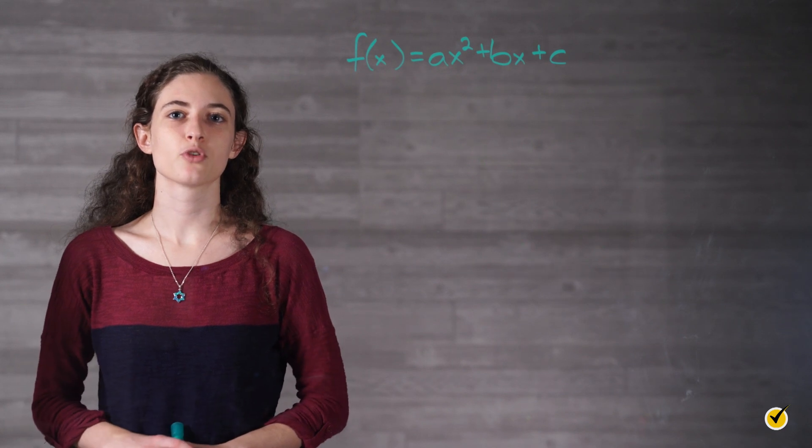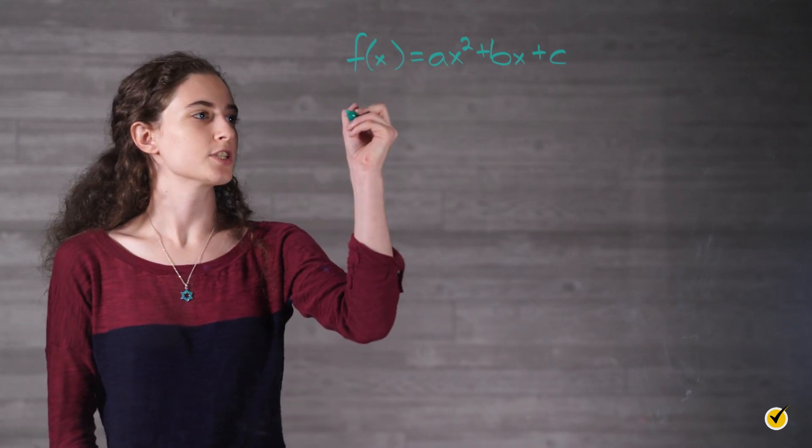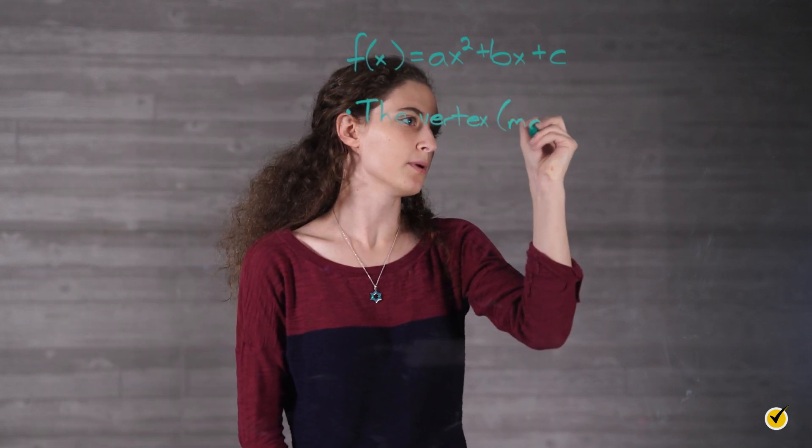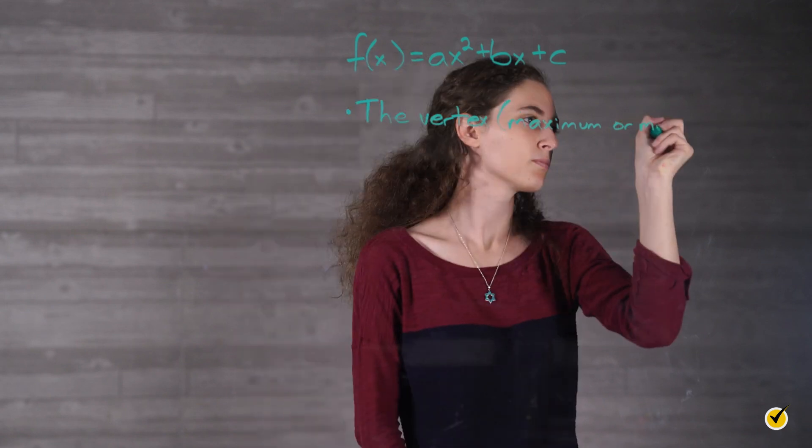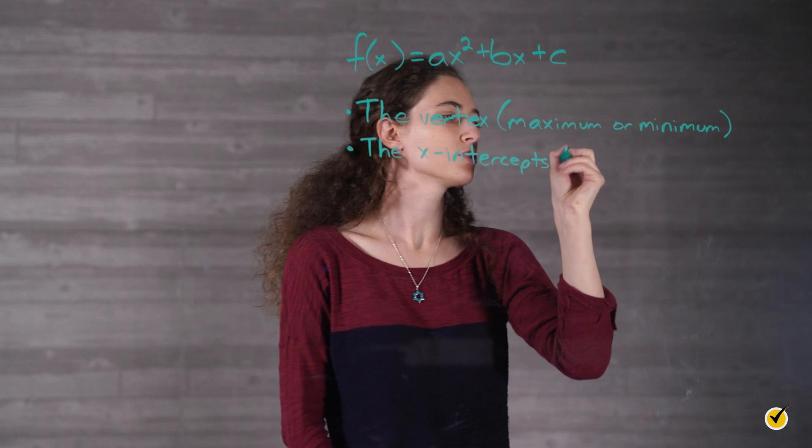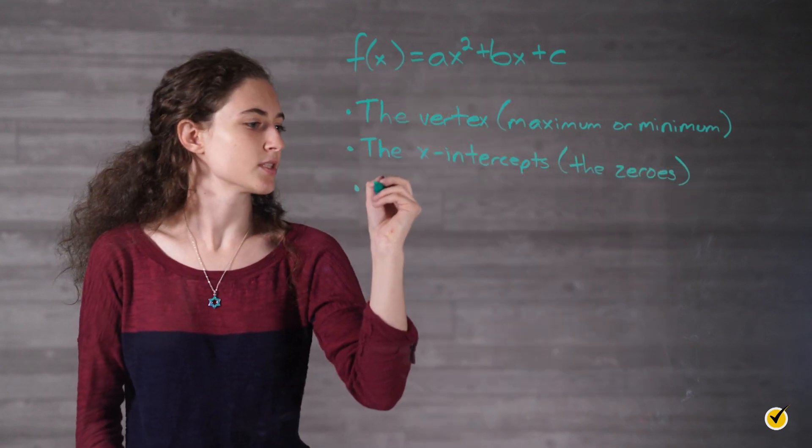The different characteristics of quadratic functions that are most commonly analyzed are the vertex, which is the maximum or minimum value, the x-intercepts, which are also known as the zeros, and the axis of symmetry.